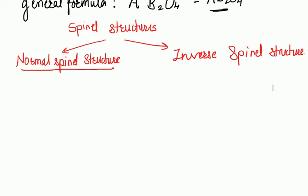As we know, anions form close packing in the crystal lattice and the empty space present between the spheres of the anions is accommodated by the cations in ionic compounds. In the normal spinel structure, we need to remember how much of the tetrahedral voids is occupied by the divalent cation and how much of the octahedral voids is occupied by the B³⁺ cation.